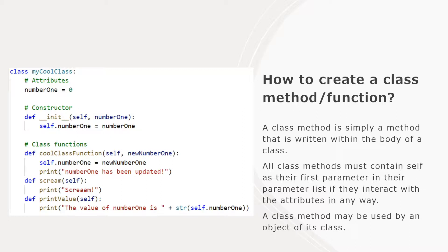On top of the self parameter, you can include additional parameters, or you can have just self as the only parameter. Once you call these functions, you only have to provide parameters besides self — self does not have to be provided. It's provided by the interpreter itself; the object provides its own self parameter. Within the class functions, you can update parameters, get input, print messages, do calculations, have if statements, loops — pretty much anything you want, just like in a regular function.